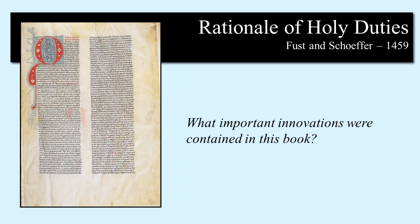Let's look at another typographic book printed by Fust and Schoffer called The Rationale of Holy Duties. I want you to know what important innovations were contained in this book. During the time that Fust and Schoffer were selling Bibles and Psalters, Gutenberg — even though he was down, he wasn't out — was still able to establish a new printing shop, where he published a 36-line Bible and a reprint of the 42-line Bible.